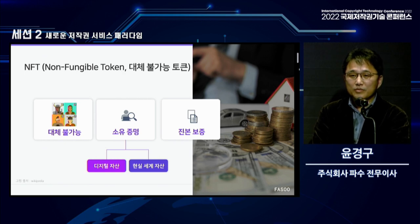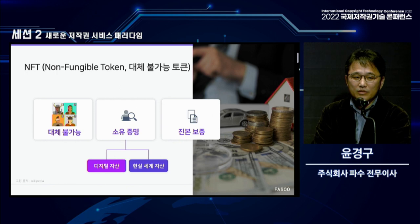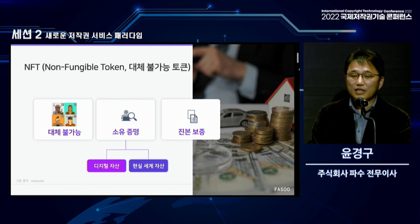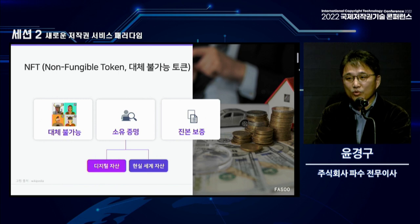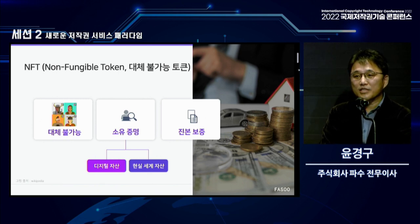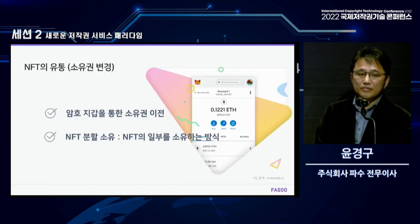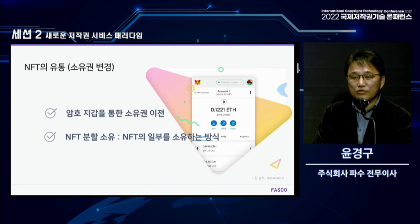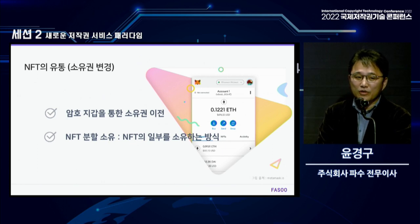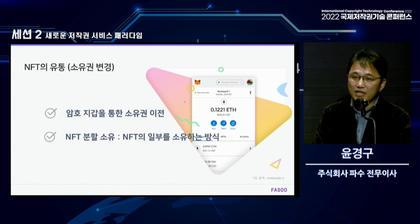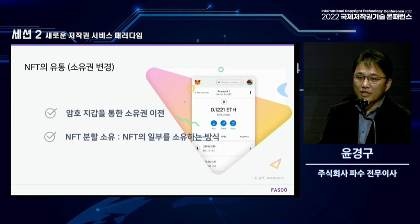As you may well know, NFT has characteristics of blockchain. It is different from a generic token. It is irreplaceable, and you can claim the exclusive right to an NFT if you have one. It is also a tool for proof of ownership. It can represent digital assets as well as assets in the real world. NFTs are always identifiable, so you can trade them. You can use encrypted wallets to transfer ownership of an NFT, and you can also use more complicated and sophisticated financial transactions. You can split NFTs to own part of one.